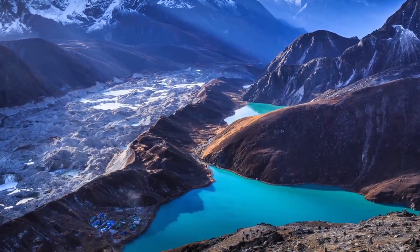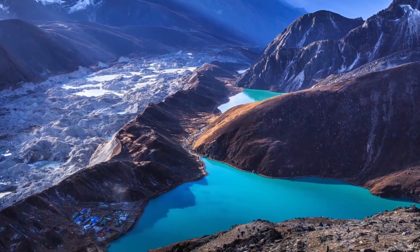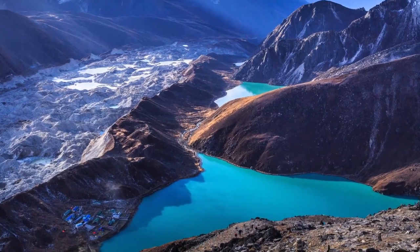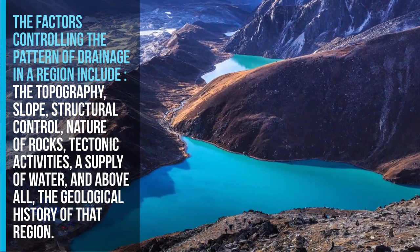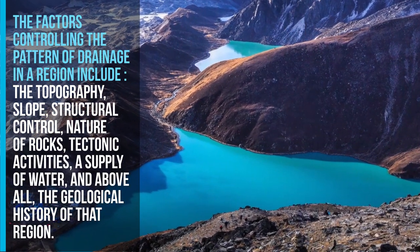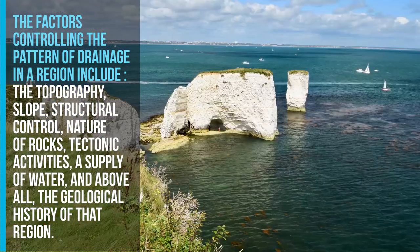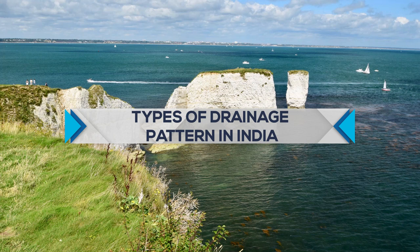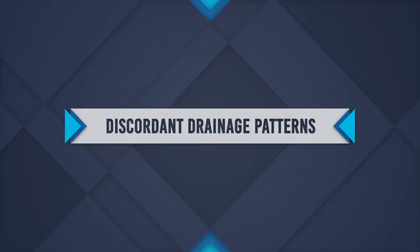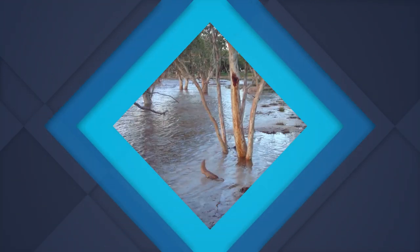A geometric arrangement of streams in a region is known as a drainage pattern. The factors controlling the pattern of drainage include topography, slope, structural control, nature of rocks, tectonic activities, water supply, and above all, the geological history of that particular region.